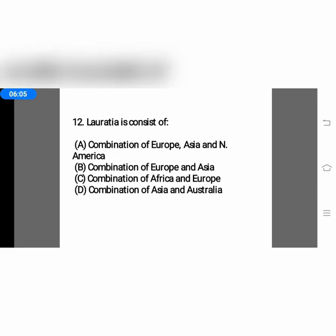The next question: Laurasia consists of — option A, combination of Europe, Asia and North America; option B, combination of Europe and Asia; option C, combination of Africa and Europe; or option D, combination of Asia and Australia. Laurasia refers to the northern part above the equator, so the correct answer is option A — Europe, Asia and North America.